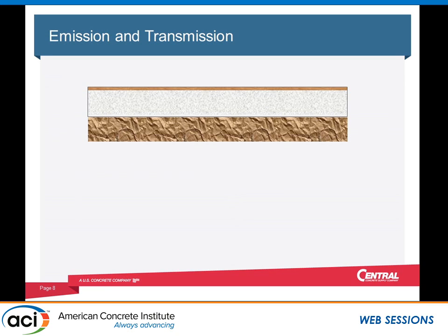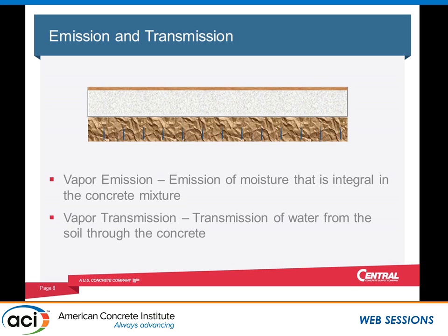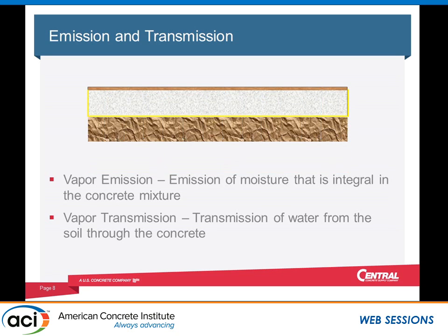I want to briefly touch on the difference between emission and transmission. Emission is the water in the concrete for convenience — to place and finish the slab. We need roughly half the water for strength; the other half is there to pump, place, and finish, and that water will eventually come out of the slab. Transmission is the water from the soils moving through the soil and concrete and eventually hitting the flooring system. A vapor barrier can take the ground out of play, but we still have the issue of moisture in the concrete itself causing flooring failures.